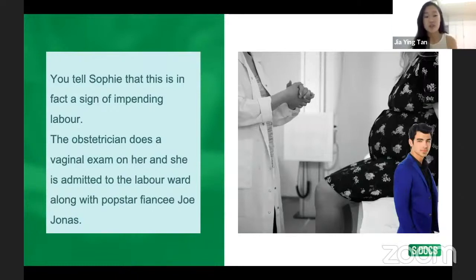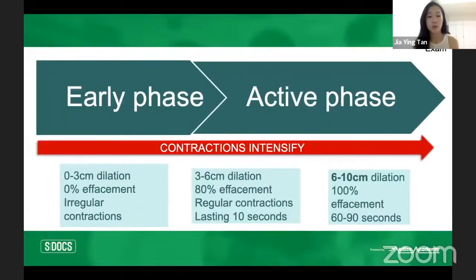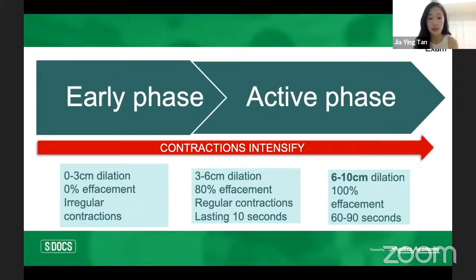Checking in with Sophie: we do a vaginal exam and confirm she's going into labor. She's admitted to the labor ward. We like to quantify labor progress so we can identify failure to progress. At the start of stage one: 0–3 cm dilation, no effacement, irregular contractions. Midway: 3–6 cm dilation. The goal is 6–10 cm dilation.